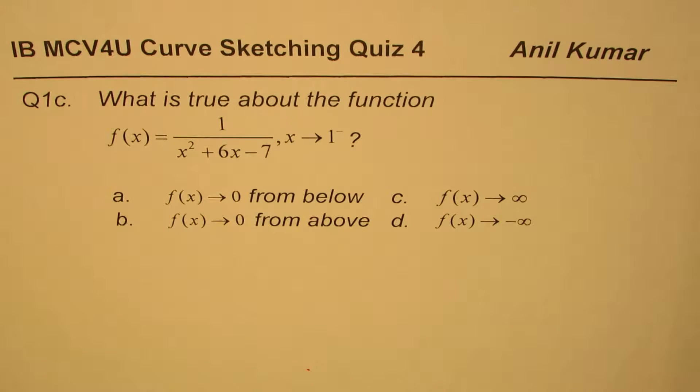What is true about the function f(x) equals 1 over x squared plus 6x minus 7 as x approaches 1 from left side? Four options are given to you. You can pause the video, answer the question, and then look into my suggestion.